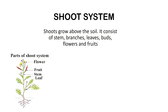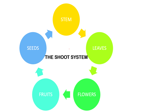The shoot system is above the soil. It consists of the stem, branches, leaves, buds, flowers, and fruits. So stem, leaves, flowers, fruits, and seeds — these are all part of the shoot system.